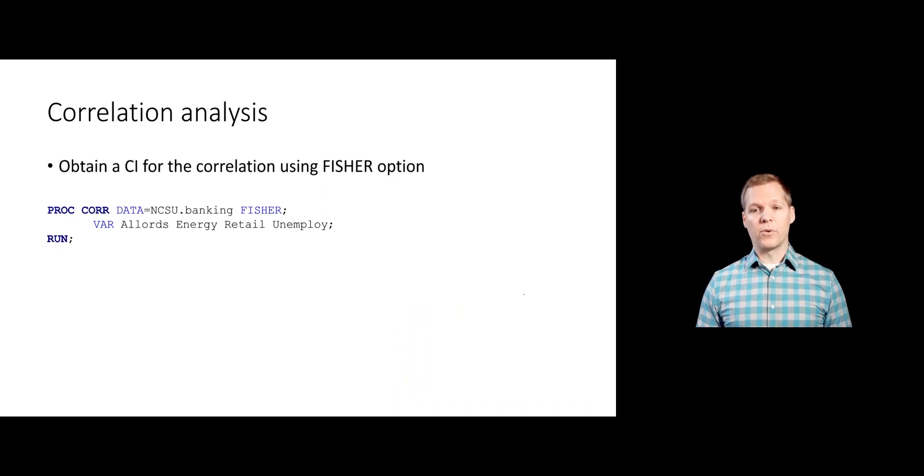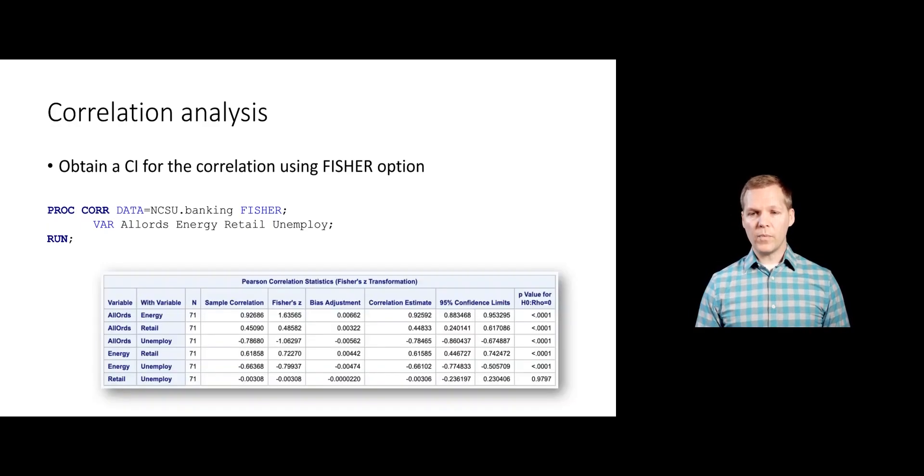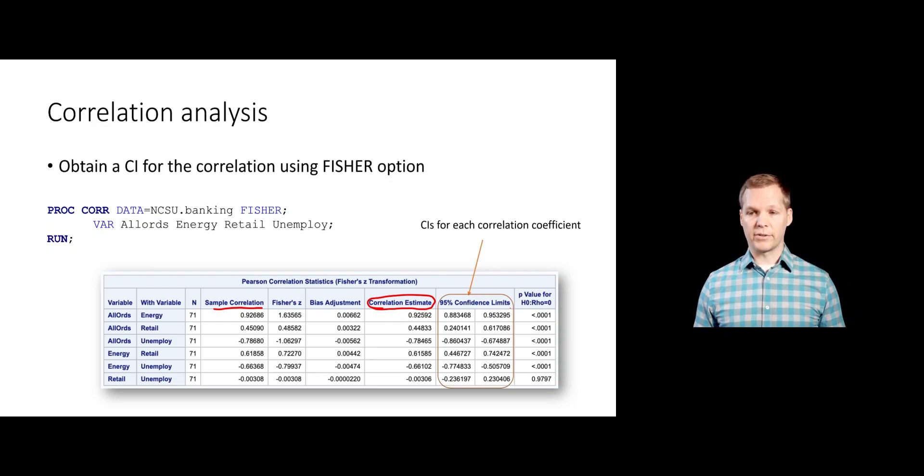We can also get confidence intervals, although we do have to change what we're doing just a little bit. We're going to add that Fisher option on our PROC CORR statement. What that does is it does a transformation of our correlation, our sample correlation that we found before. It does a transformation and gives us this new correlation estimate. Usually they're pretty close. But then we get a 95% confidence interval for each one of those correlation values. I would be 95% confident that the actual correlation between all ords and energy falls between 0.88 and 0.95. Confidence intervals are wonderful. They give you a range of values for that population value.